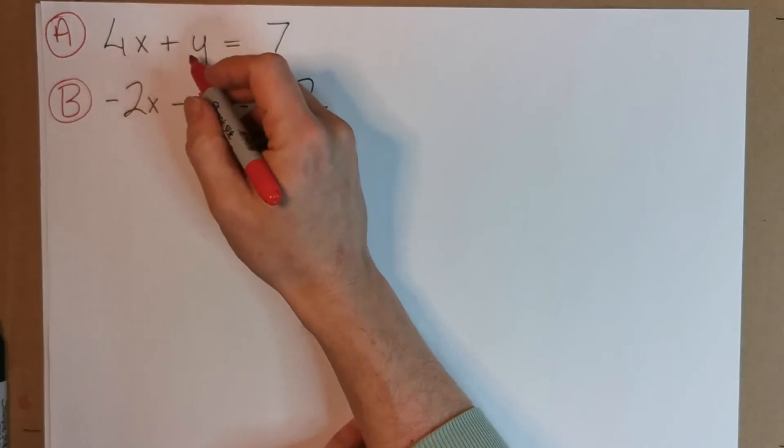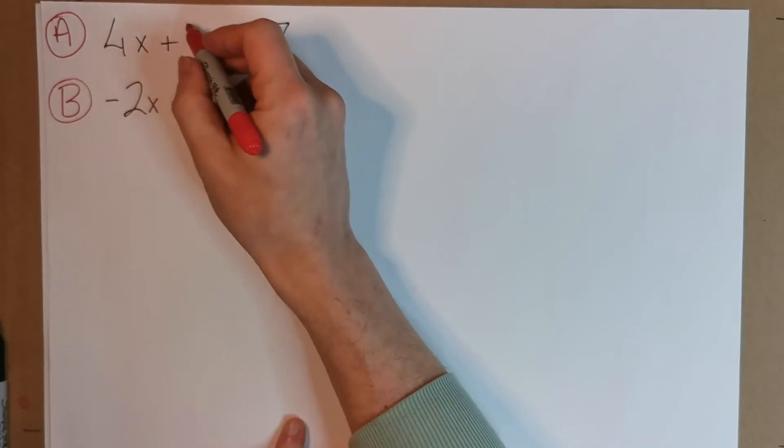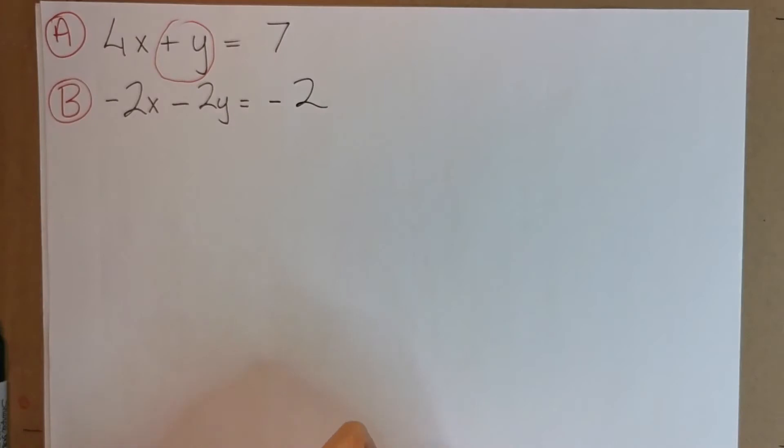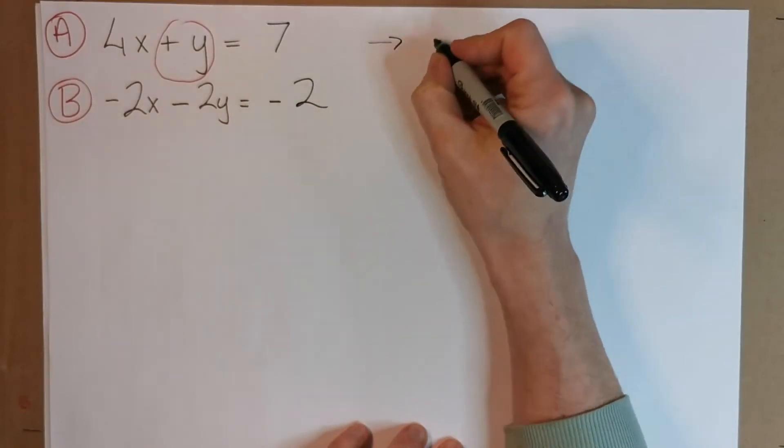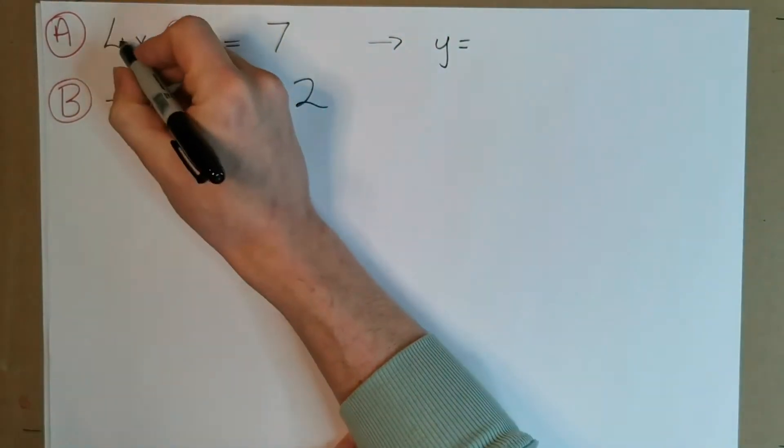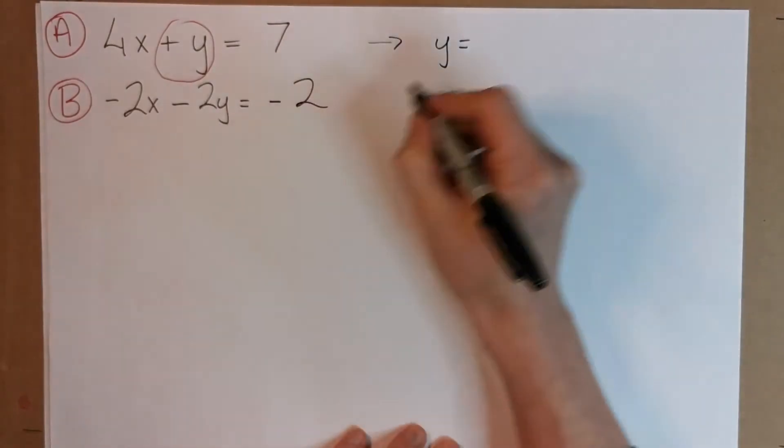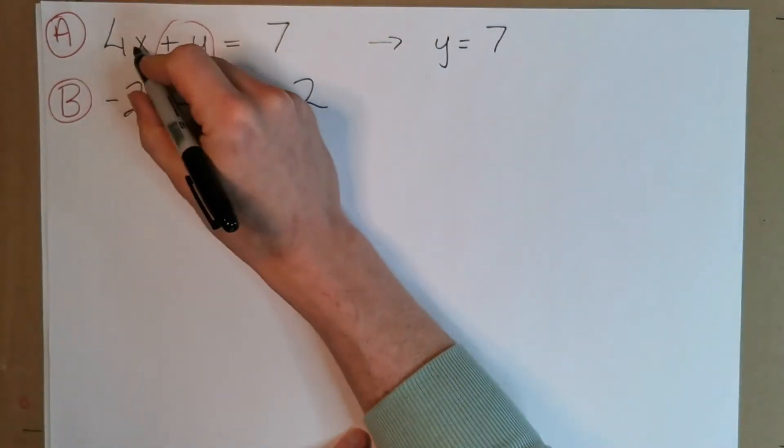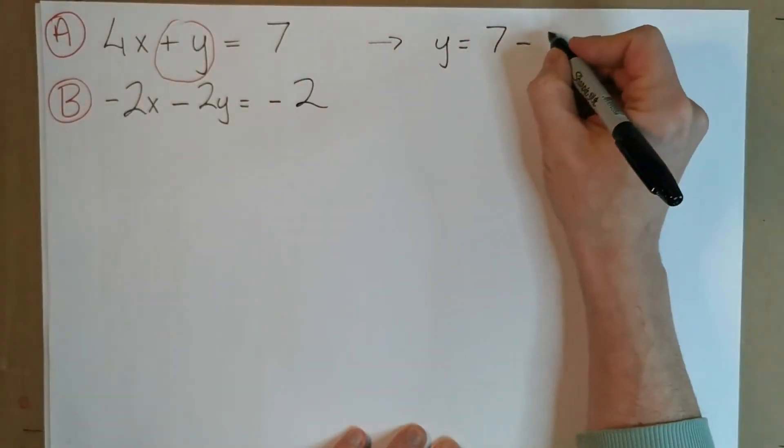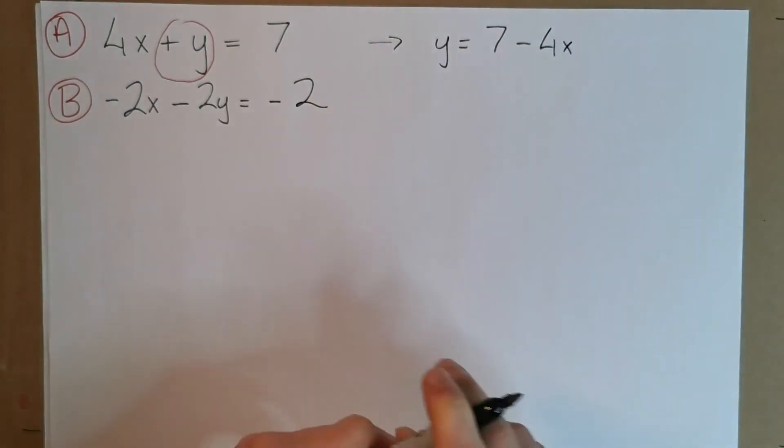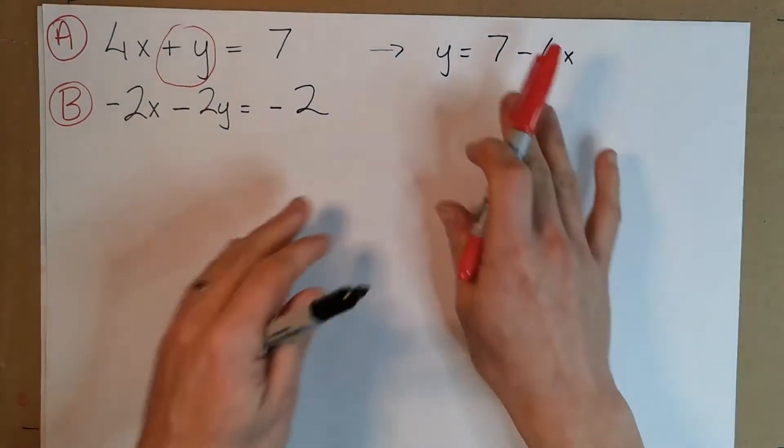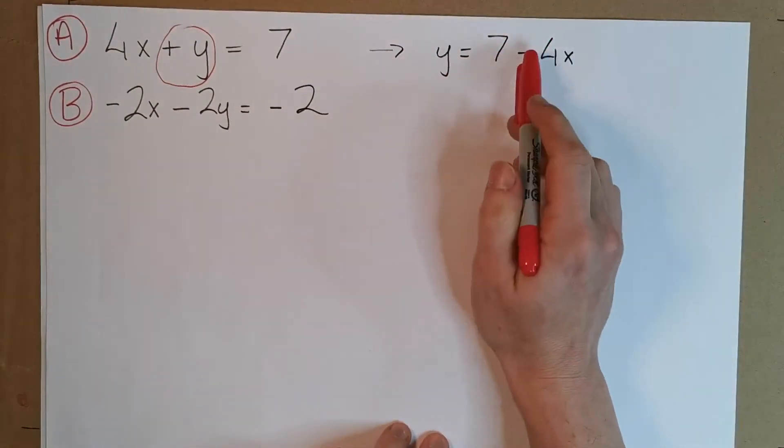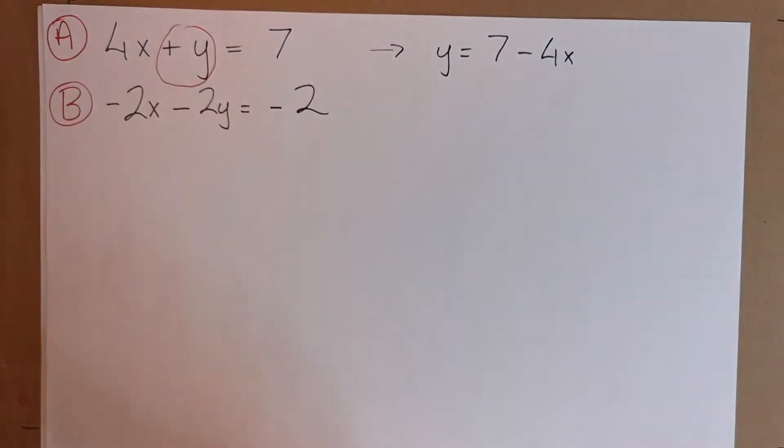Let's just do this with a substitution method. We can see this y here is singular and positive, and that's what we're actually trying to get to. So it's kind of already done for us here, so we're going to rearrange this A equation. We have y is equal to, now we're going to bring this 4x over to the 7. So y is equal to 7, but now that 4x comes over, he becomes a minus 4x. So now we've gotten y, if you like, in terms of x, and we've rearranged equation A to do that.